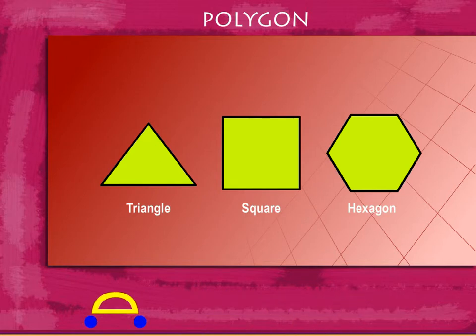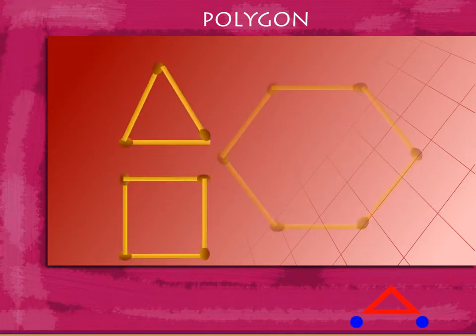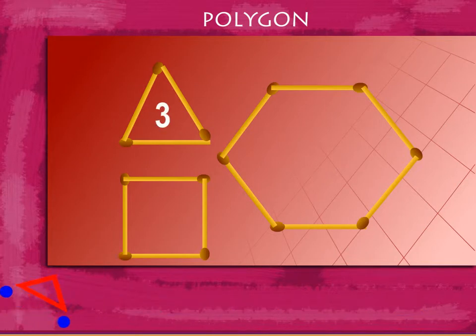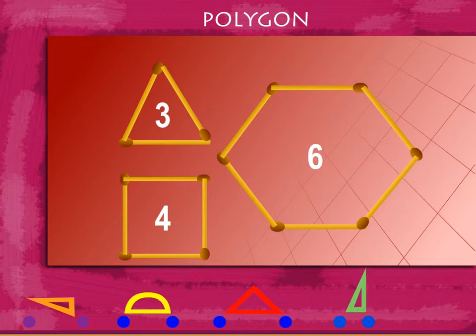A polygon is also a figure with linear boundary. You can use matchsticks to form a variety of polygons. You can use three matchsticks, or four matchsticks, or six matchsticks to make polygons.